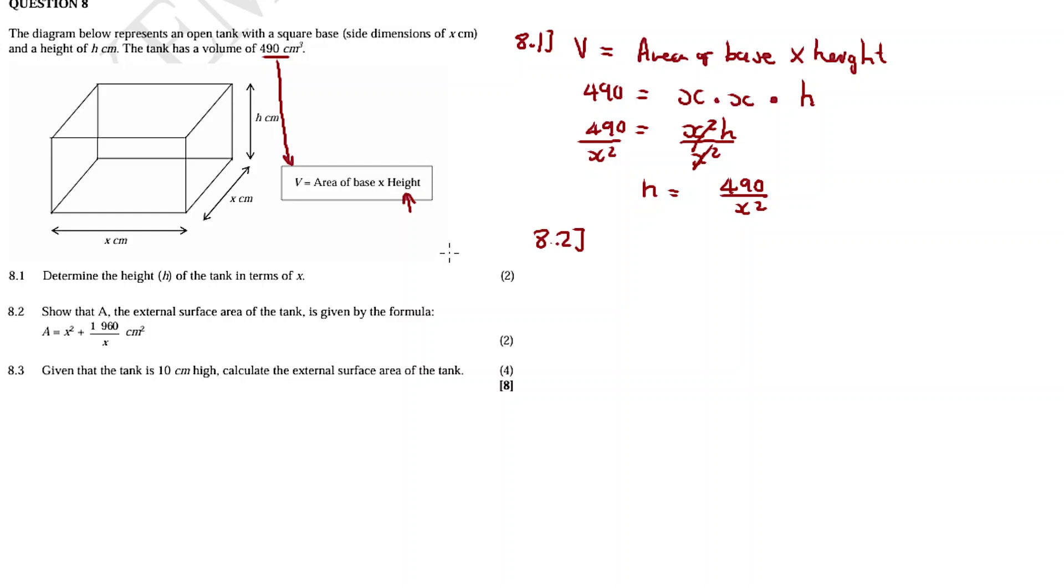So 8.2, show that A, the external surface area of the tank, is given by... We know what is surface area. A surface area is just basically the area of all the faces around the shape added together. So the area for this face, area for this face as well as area for this face, area for the back face, and area for the base combined. We don't have anything at the top. The top part does not have anything, so we don't calculate the area for that, for the top part.